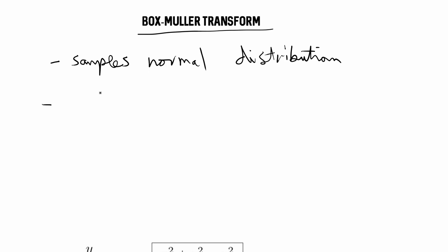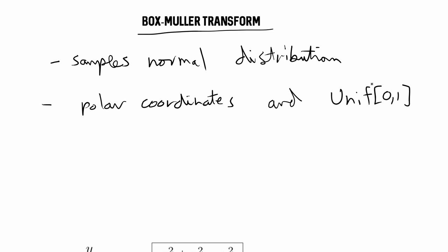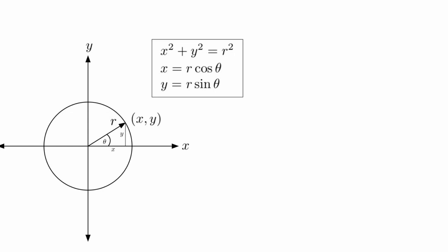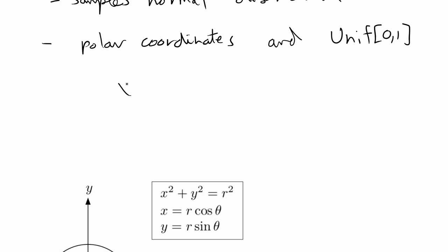The Box-Muller Transform uses polar coordinates and uniform random variables in order to transform into samples from the normal distribution. Let's go ahead and get started with how the transform works.